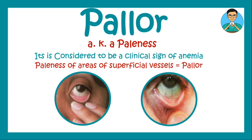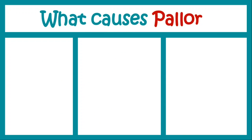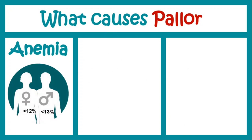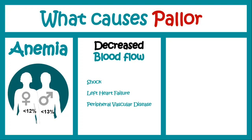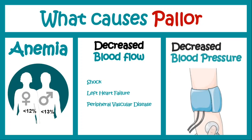What causes pallor? Anemia can cause pallor, which is defined by WHO as less than 12 g/dL hemoglobin in females and less than 13 g/dL hemoglobin in males. Apart from that, decreased blood flow as in shock, left heart failure, or peripheral vascular disease can cause pallor. Decreased blood pressure can also give rise to pallor.